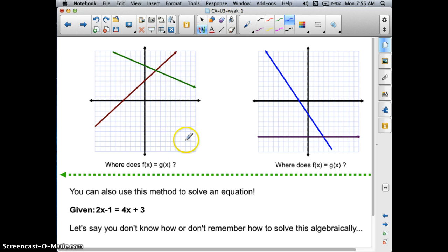So in this first graph, I have two functions graphed for you. Let's call the green one f of x and the brownish one g of x. What is the solution? Where does f of x equal to g of x? Well, you look at the point of intersection and you look at the x value. And x is 2, and so that is the solution.